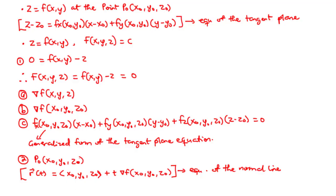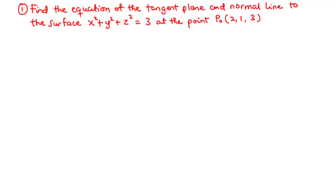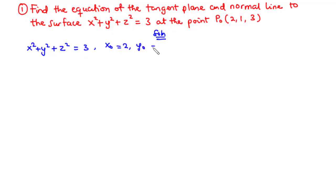At this point, let's try an example. We are going to find the equation of the tangent plane and normal line to the surface at the point P0. We have the surface given by x² plus y² plus z² equals 3, and the point P0 equals (2, 1, 3), which means x0 equals 2, y0 equals 1, and z0 equals 3. Notice that we have this expression in the form capital F of x, y, z equals c.